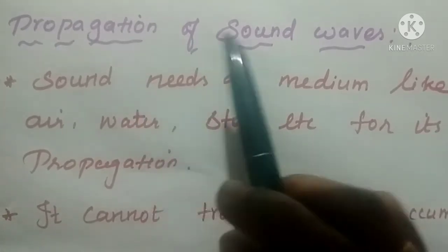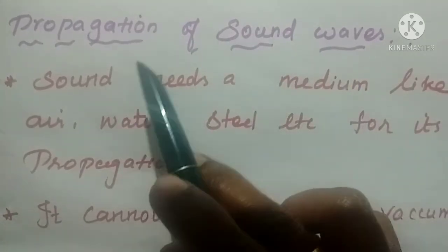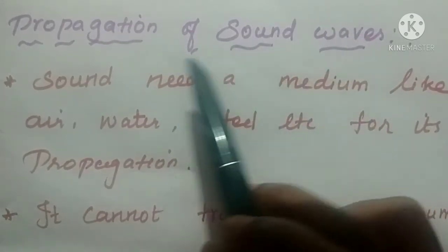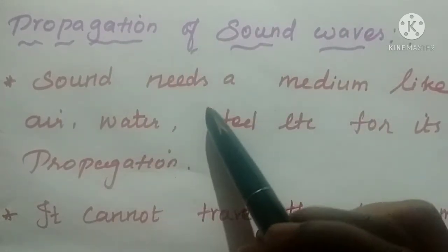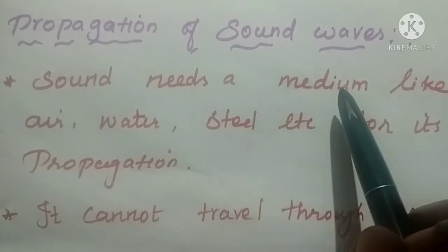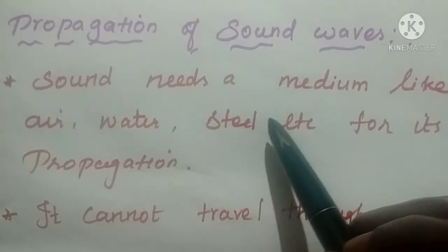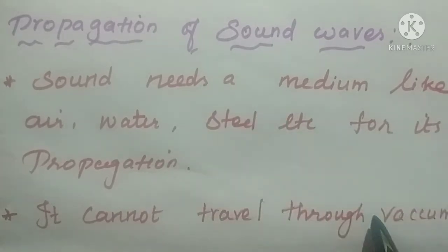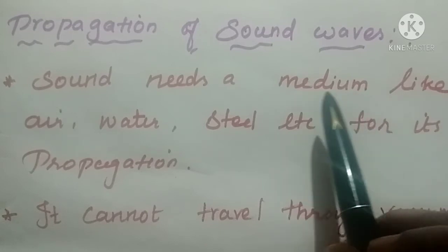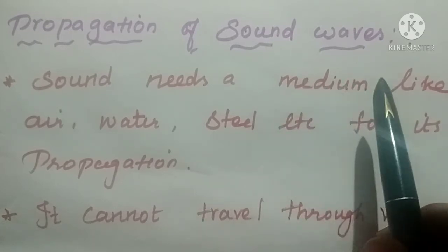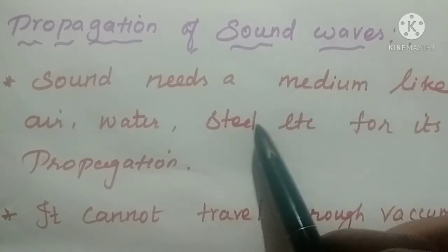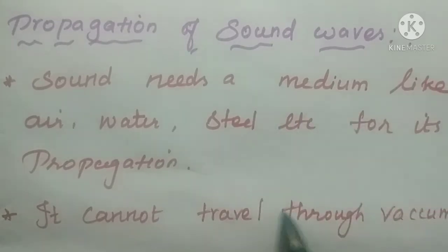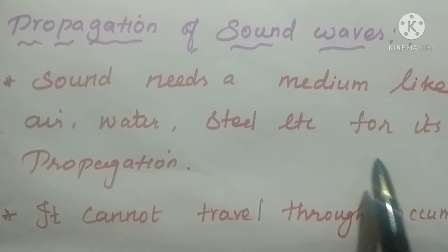Next we are going to learn propagation of sound. Propagation means how sound travels from one place to another. Sound needs a medium like air, water, steel, etc. for its propagation. It cannot travel through vacuum — it always needs a medium: air medium, water medium, or solid medium. Any one medium is needed for its propagation.